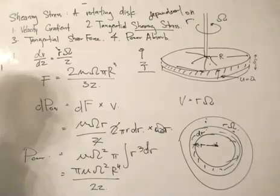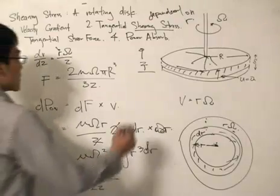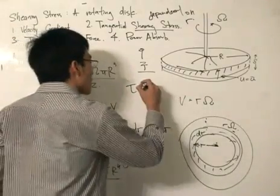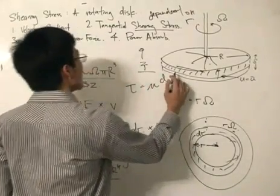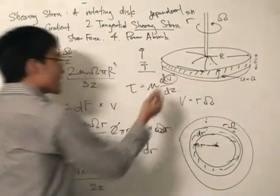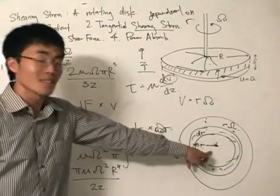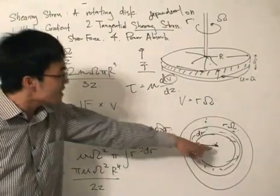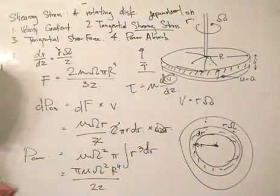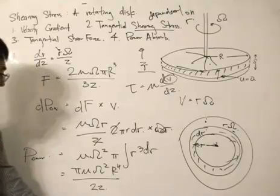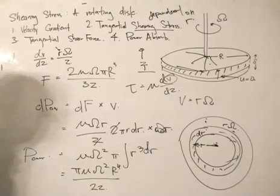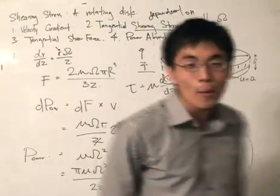This is a unique problem because tau is not constant throughout the whole disc. Tau equals mu·dv/dz, and v is dependent on the radius from the center, so we get a different value of tau at each radius. That is why we need to use calculus. It's quite a difficult example, but I hope you can understand it.